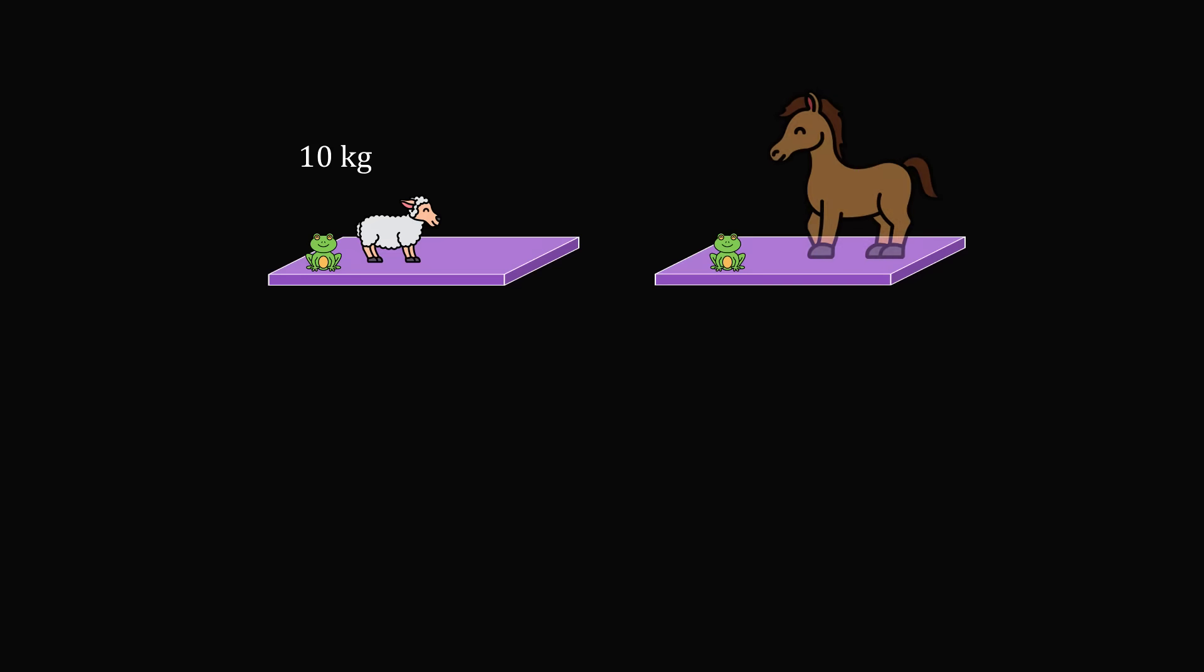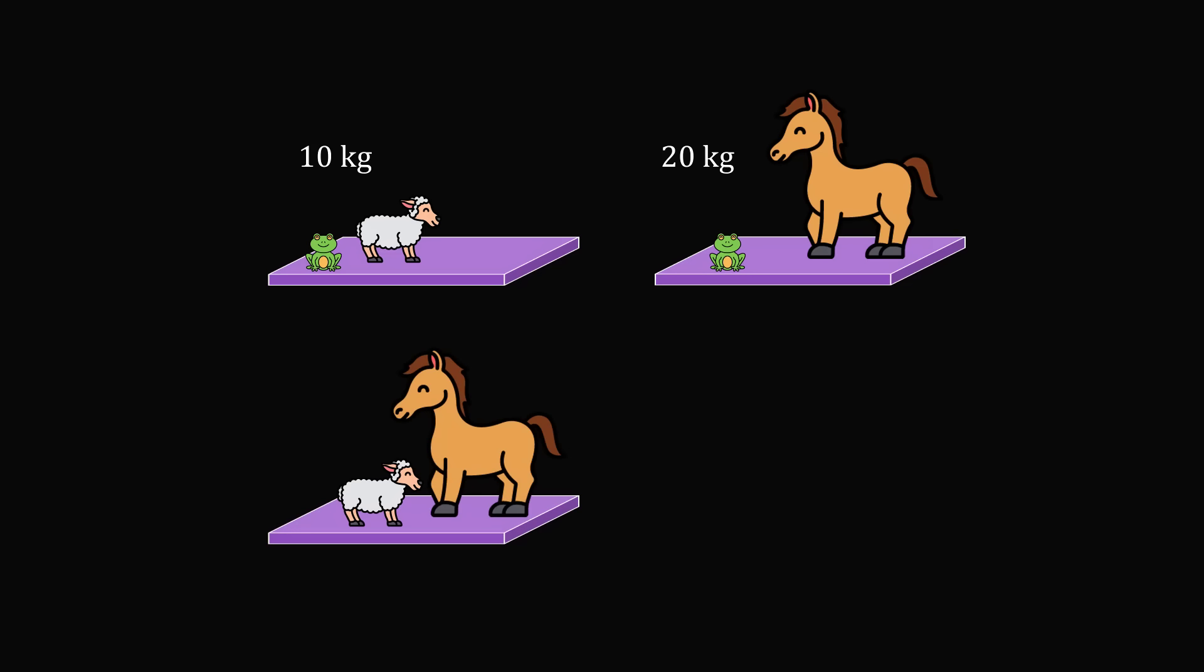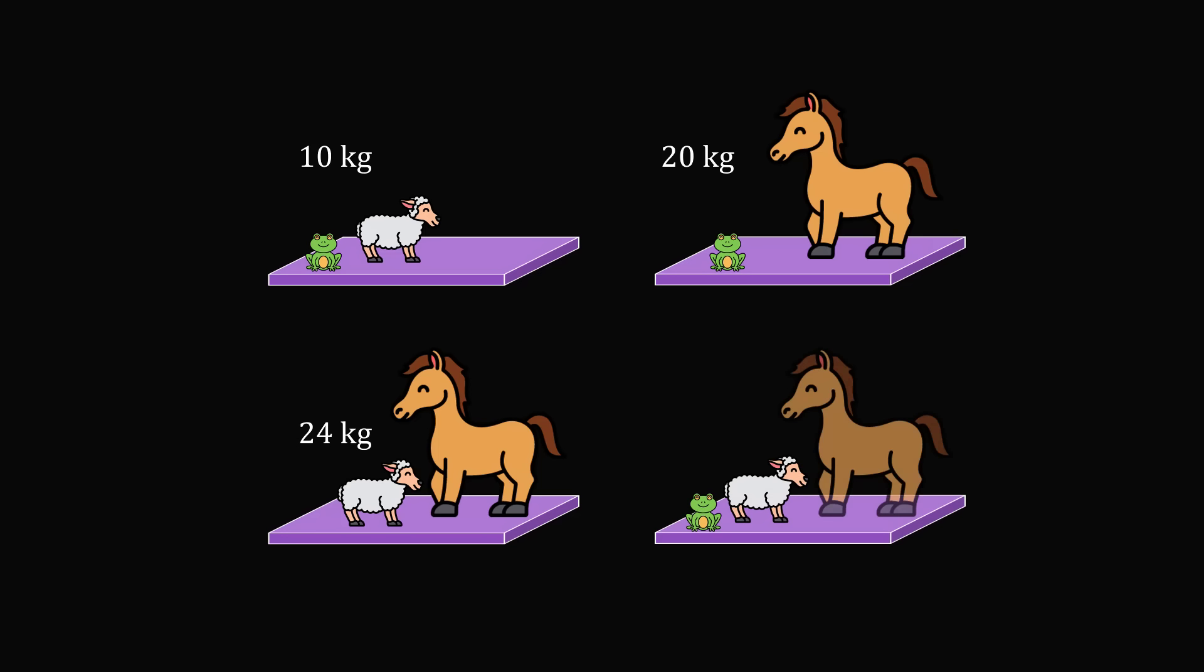We have a weighing scale. The first diagram shows a frog and a sheep together weigh 10 kilograms. Then the weight of a frog and a horse is 20 kilograms. The combined weight of a sheep and a horse is 24 kilograms. And the puzzle is, what is the weight of a frog, a sheep, and a horse together? How can you figure it out?